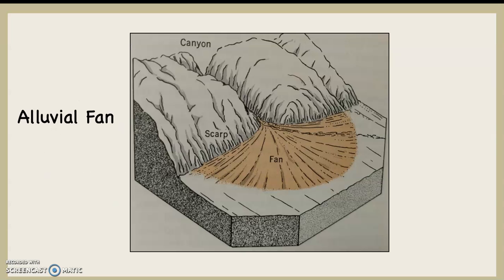This is a diagram of how an alluvial fan forms. You can see where it says 'fan' and 'canyon.' The yellow indicates water coming down out of the canyon, then entering the flat landscape where it slows down and deposits material — that is the alluvial fan circled in red. All of that material circled in red has come from that canyon and been transported to the flatter landscape. So you have degradation occurring in the steeper canyon area and aggradation happening in the flat landscape where the alluvial fan is forming.